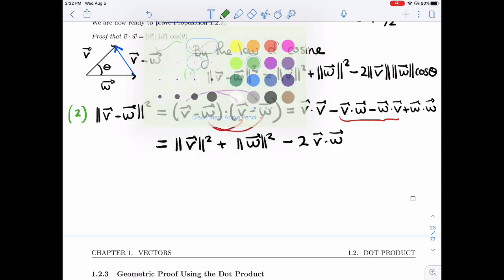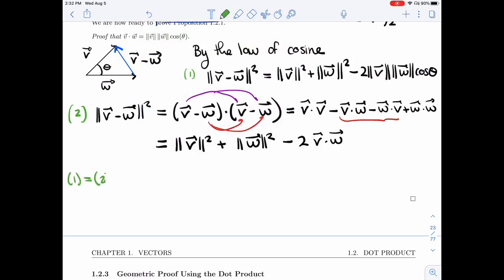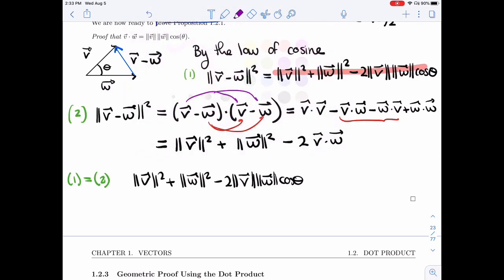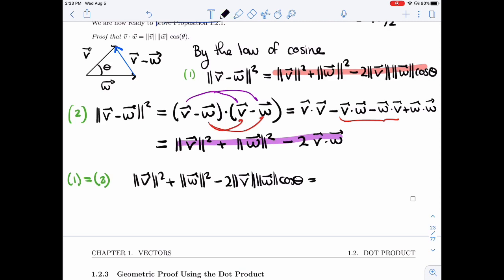So we have two different ways of seeing the same number, the same length. One is the same as 2. So that tells me that what I got up there, this entire thing is the same as this whole thing. So this one is length of V squared, length of W squared, minus 2V dot W.